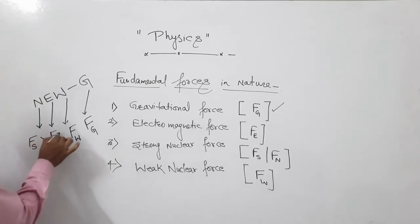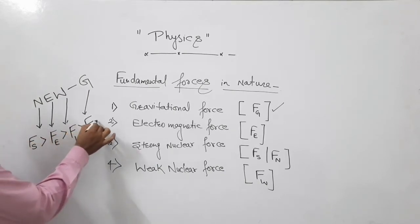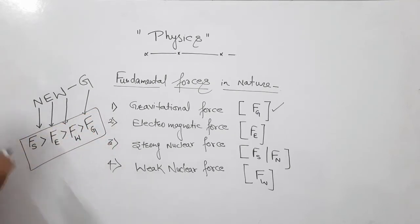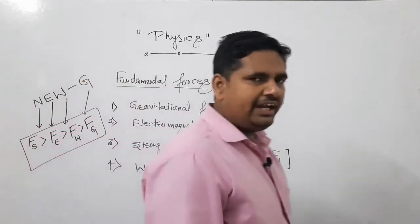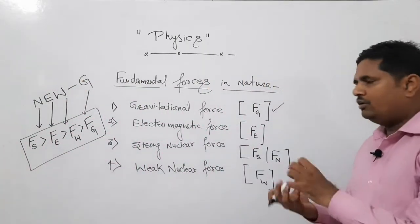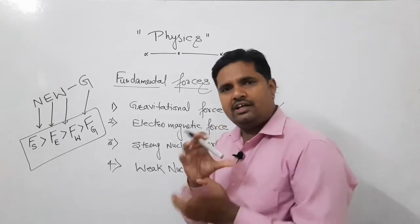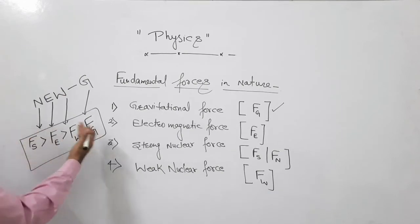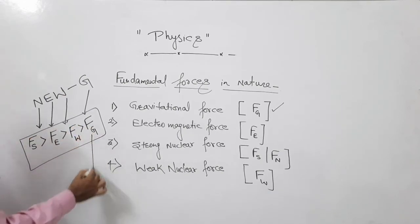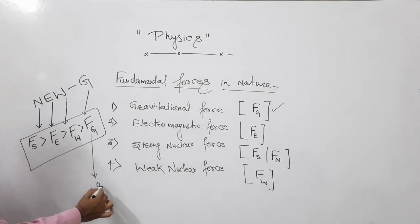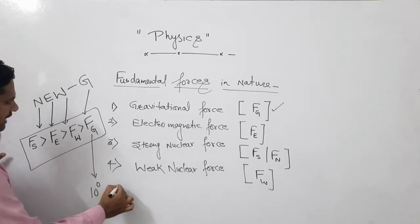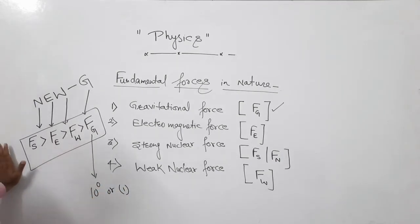And their power is something like this. The most powerful force is strong nuclear force. Inside the nucleus, proton-proton, neutron-neutron, proton-neutron - it holds them together. It is called strong nuclear force. If we compare their strength, for gravitational force we use 10 raise to power 0, which can be written as only 1.